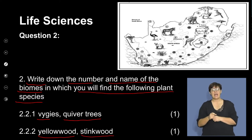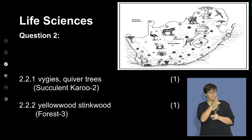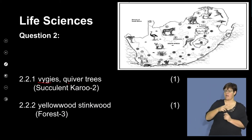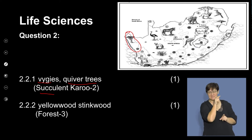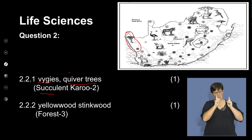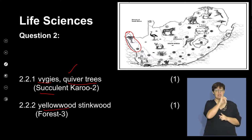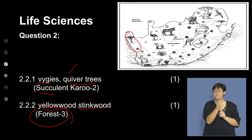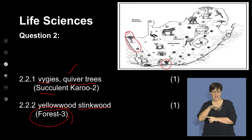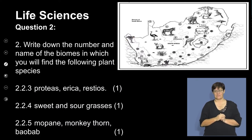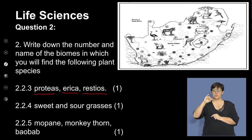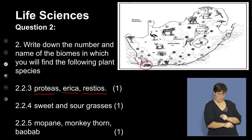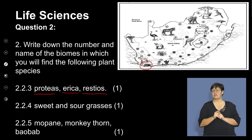The yellowwood and stinkwood trees are also given. The quiver and fuchsia are found in the Succulent Karoo — here you can see an image of a quiver tree. Your Succulent Karoo is unique in having these species. The yellowwood and stinkwood are found in your forest biome, which is area number 3. Plants such as proteas, ericas, and restios are found in the Cape Fynbos, area number 1, as clearly seen on the map.